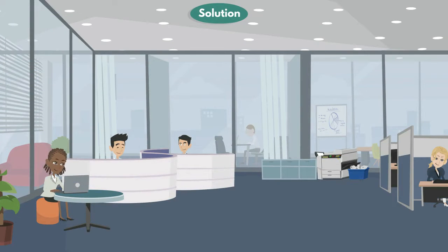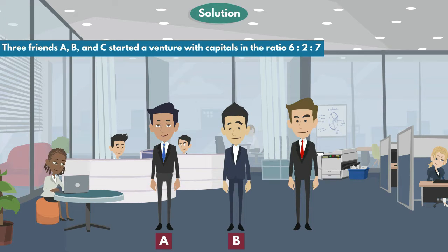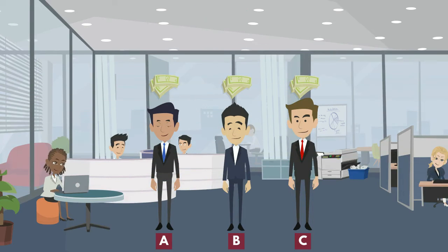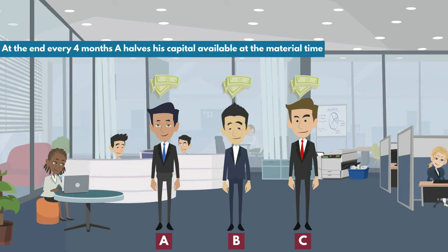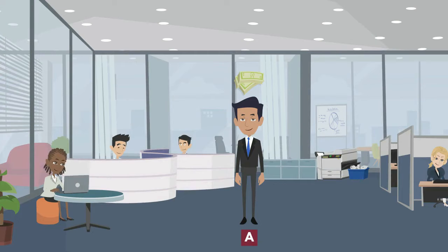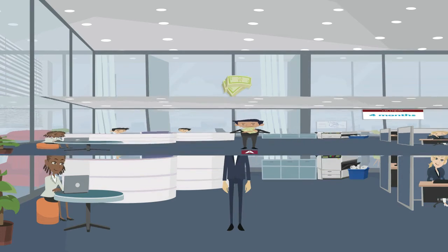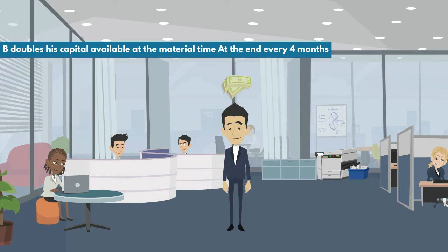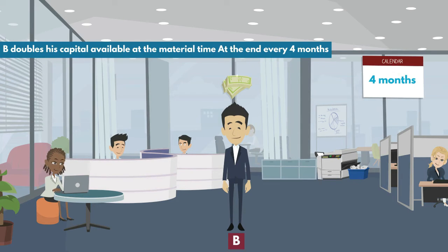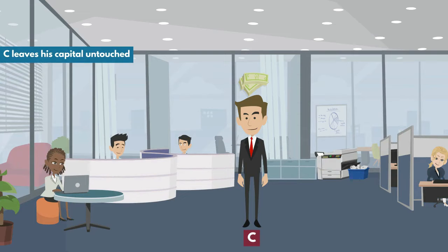In the question, three friends A, B and C started a venture with capitals in the ratio 6:2:7. At the end of every 4 months, A halves his capital — meaning A takes back half his capital. B doubles his capital available at the material time at the end of every 4 months. C leaves his capital untouched at the end of the year.